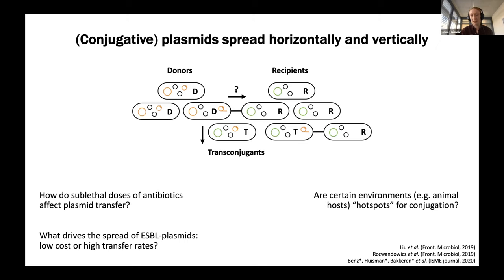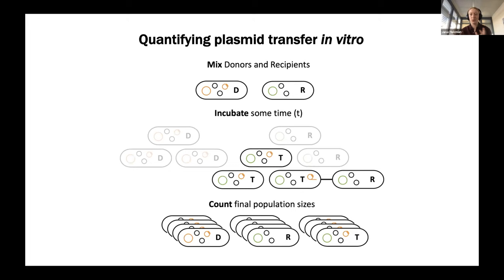Antibiotics might also actively act on the conjugation machinery and its transcription. There are other questions: what makes certain plasmids very successful — is it their low cost or their high transfer? What is high transfer in the first place? How do we compare transfer across different plasmids and different environments, and can we predict which plasmids are most problematic for spread?